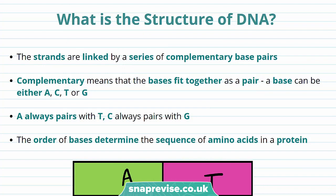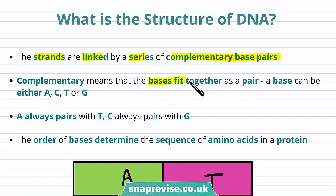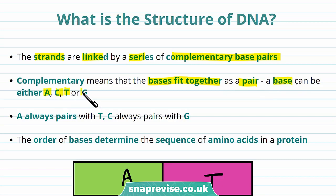So let's talk about the structure of DNA a little bit more. The strands we saw before that form a double helix are linked by a series of complementary base pairs. What I mean by complementary is that the bases fit or are attached together as a pair. And these bases can either be A, C, T, or G.